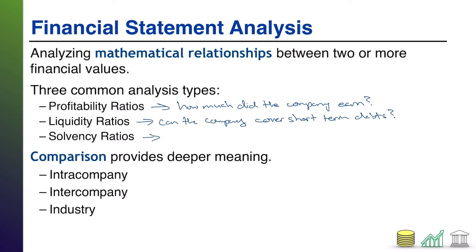Solvency ratios are very similar to liquidity ratios, except they focus on: can the company cover long-term debts? It's one thing to say the company can survive in the short term, but sometimes investors want to know, can the company survive in the long term? So now you're not thinking just about current assets, but also the long-term assets you have access to, and not just current debts coming due, but long-term debts as well. Most of these ratios are going to involve some combination of total assets and total liabilities, and again they're going to be very balance sheet focused.